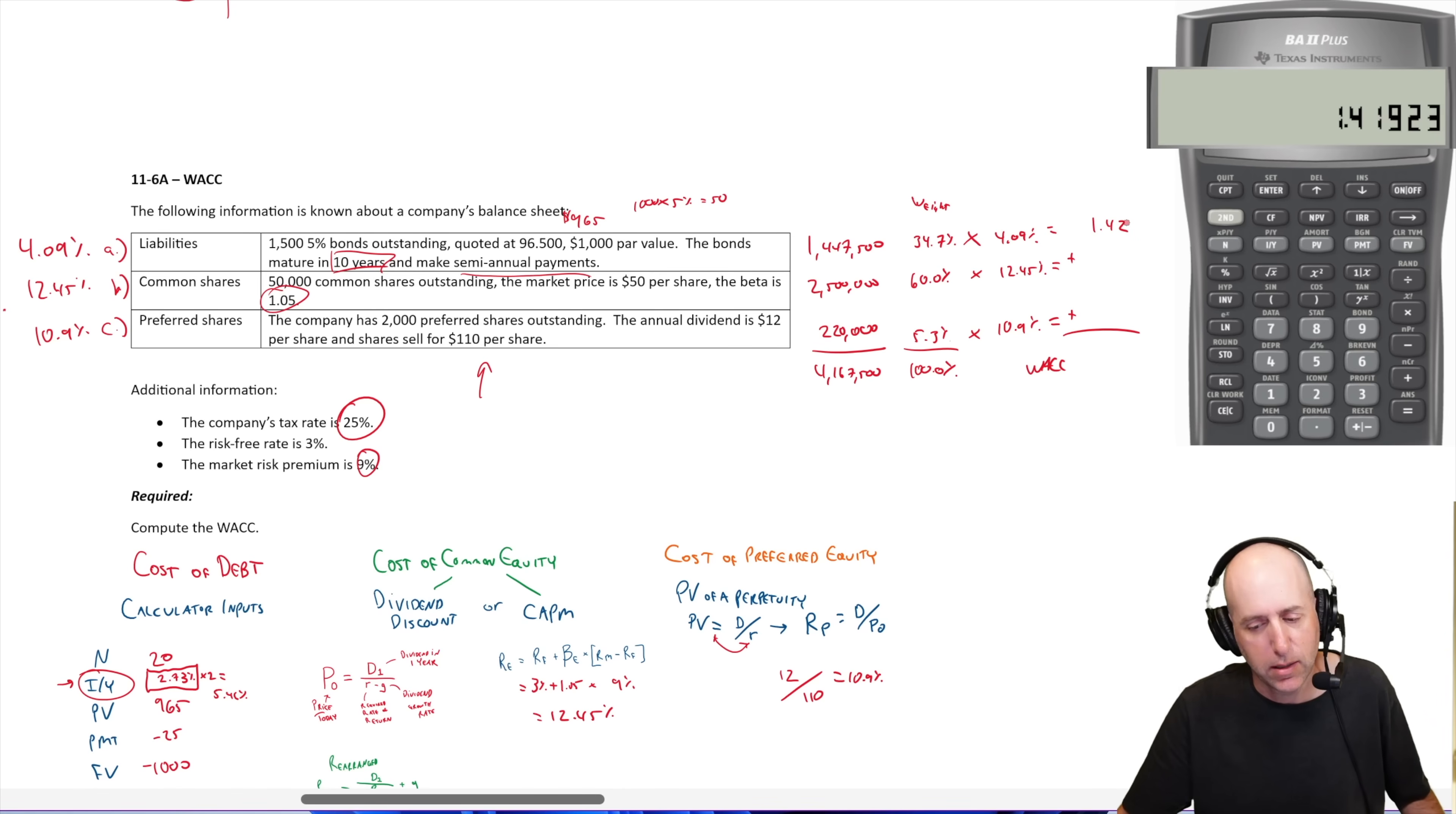60%, 0.6 times 12.45, 7.47. And last 5.3 or 0.053 times 10.9, 0.58. And we would expect that to be small because the weight is so small. So we're expecting a small number there. If you end up with a big number, like a number that's larger than any other two, you should just go, Oh, I got decimals in the wrong spot. I screwed up. That is by far the most common screw up is people just put the decimal in the wrong spot. 1.42 plus 7.47 plus 0.58. We ended up at 9.47%. That's our weighted average cost of capital. That's the answer to the question. That's what this company, when they're sort of calculating their required rate of return on future projects or purchases or investments, they should use 9.47% as their discount rate.